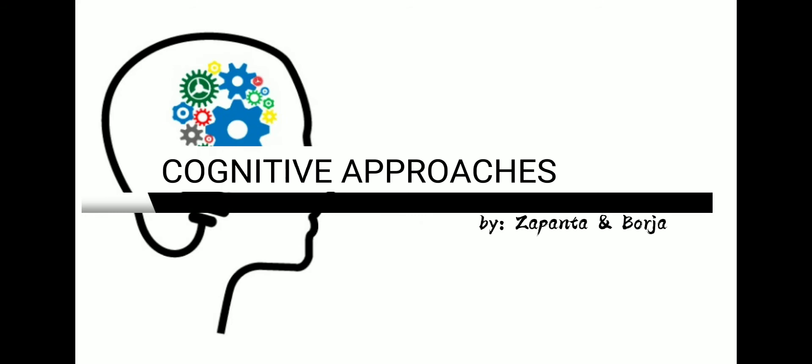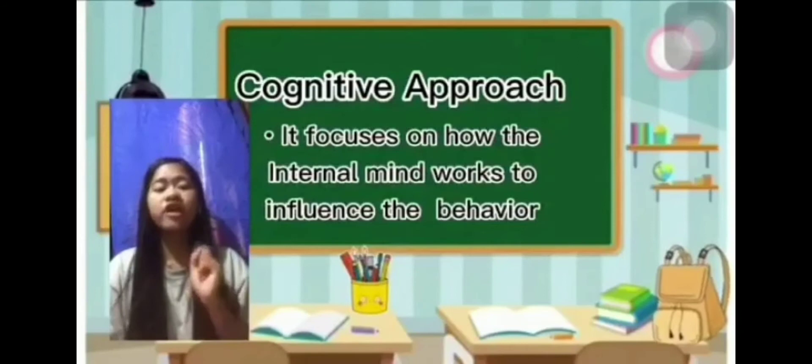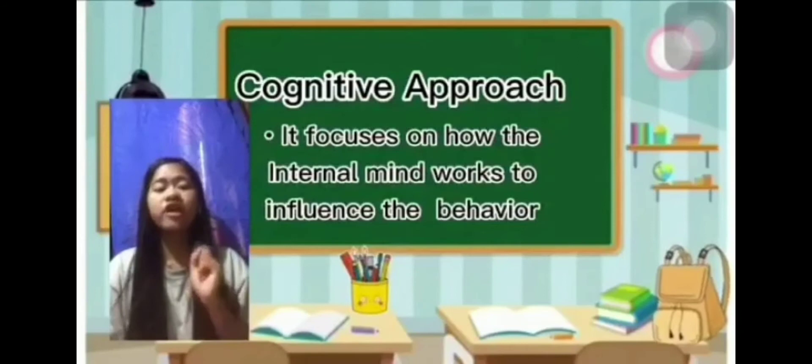The cognitive approach is different from the learning approach. The cognitive approach focuses on how the internal mind works to influence behavior, while the learning approach focuses on observable external behavior. So the cognitive approach is about internal processes, while the learning approach is about external, observable behavior.